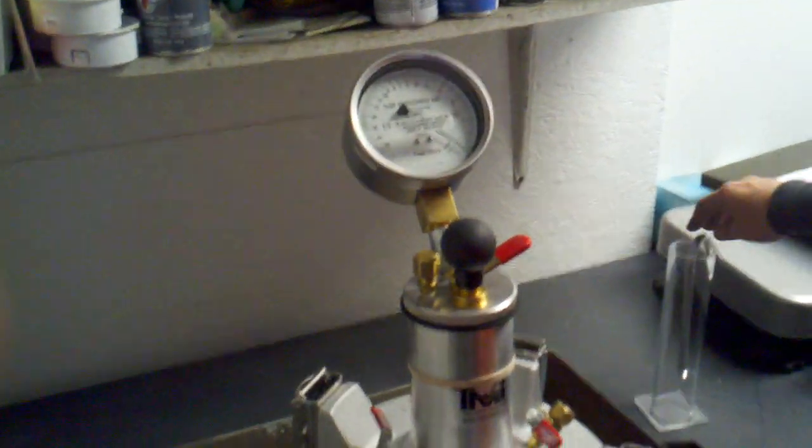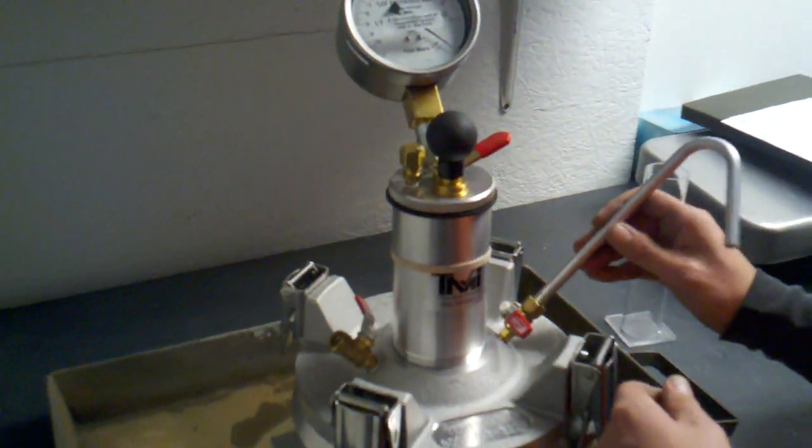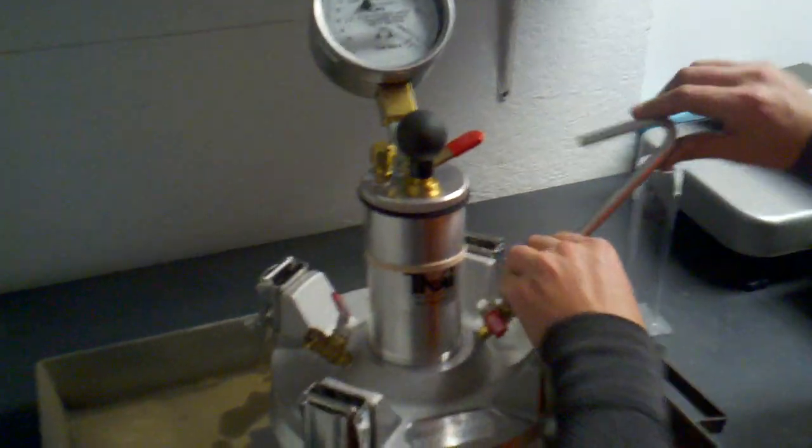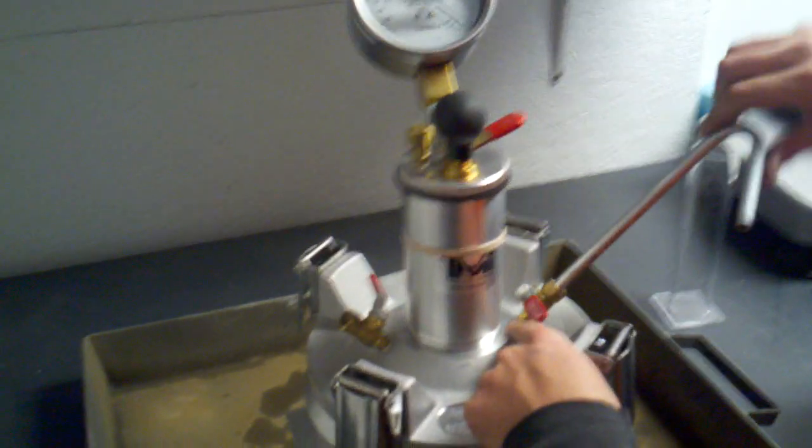But now that we're at zero, we will take our bent tube and put it into the petcock with the straight tube that's inside it.